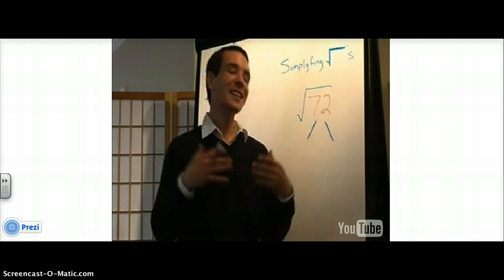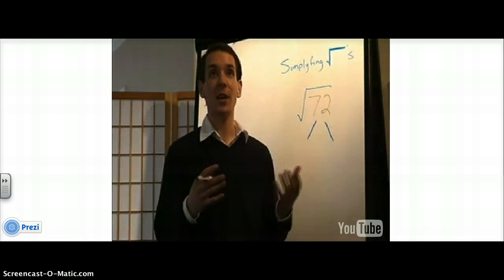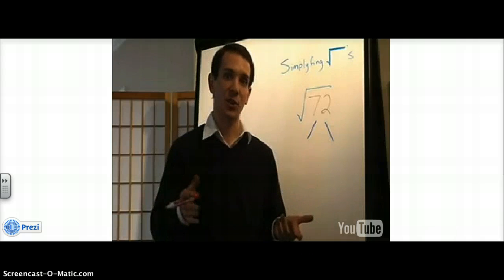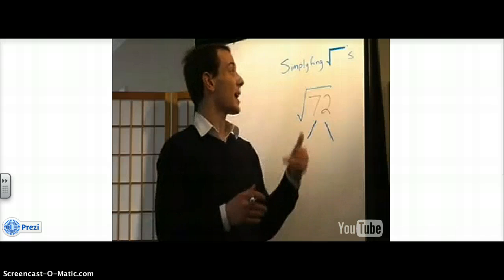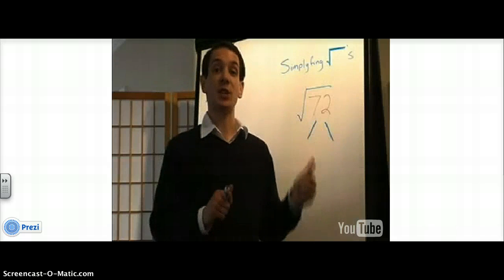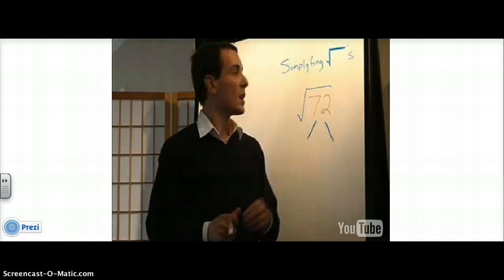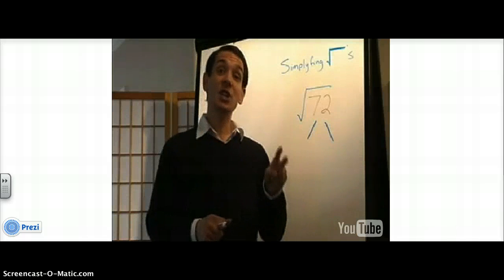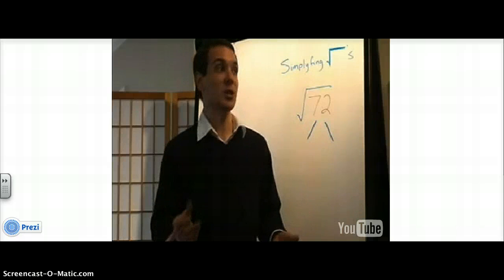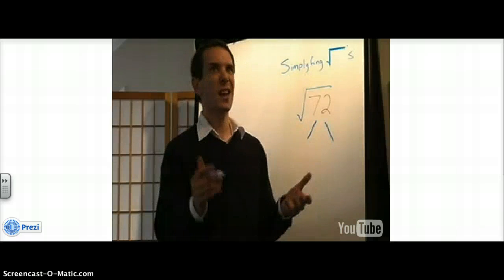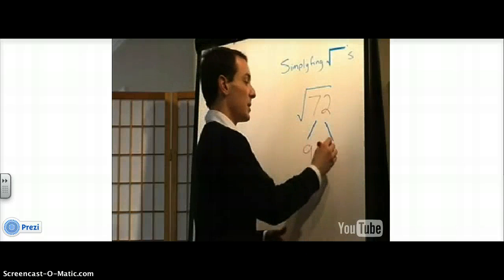Simplifying square roots: when you get a simple square root like the square root of 9, you probably know that's going to be 3 — nothing special there. What we want to do is handle the ones that don't give you a pretty number. Like the square root of 72. Here's how we deal with these — they're really not bad. You figure out any two numbers that multiply to 72. You've probably heard them called factor trees. So I'm going to say 9 and 8.